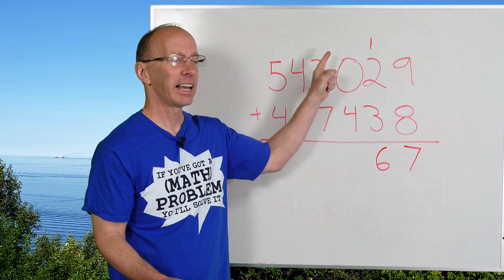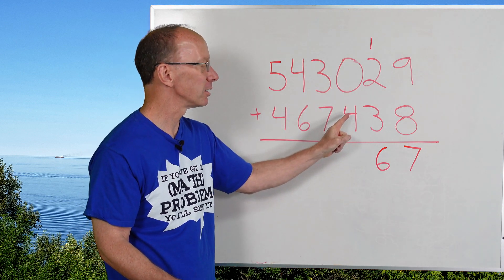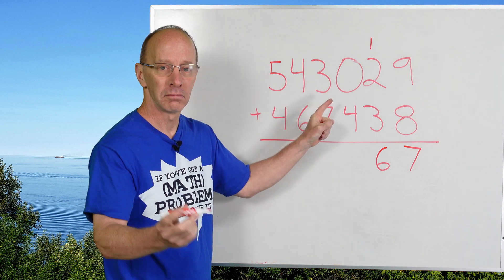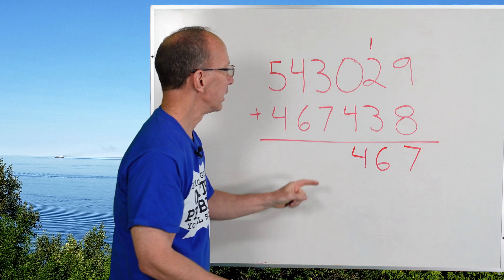I did not have to carry any number right here. So now I just add the next column here. So 4 plus 0 is 4. Put the 4 here, and then we start again.